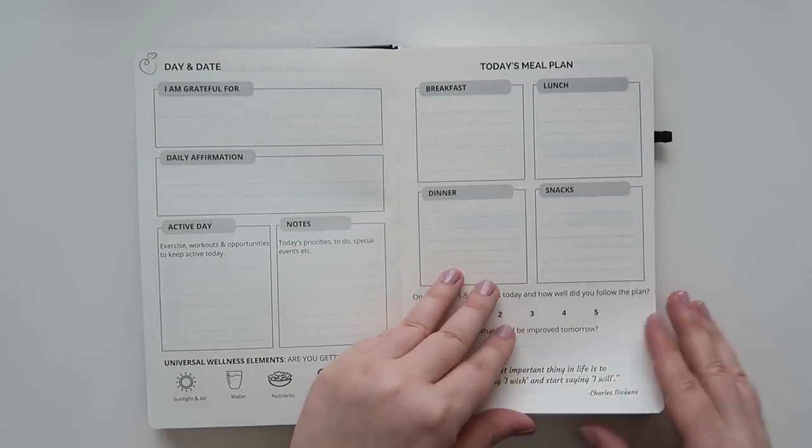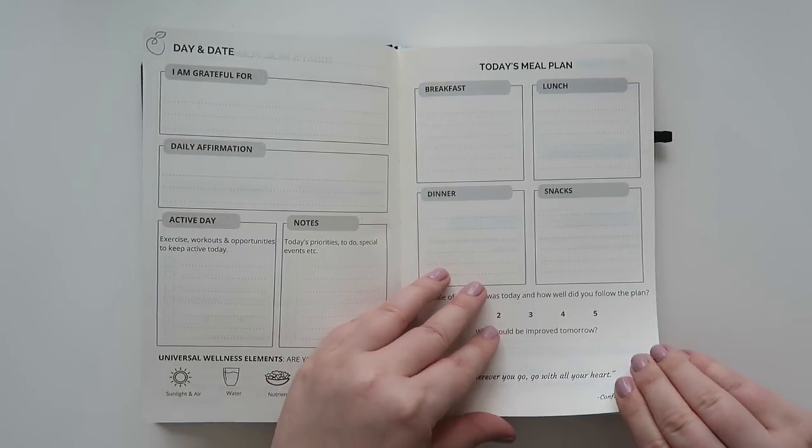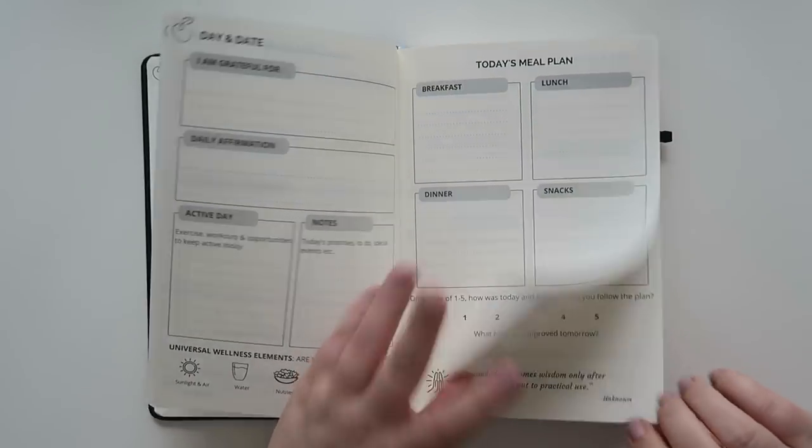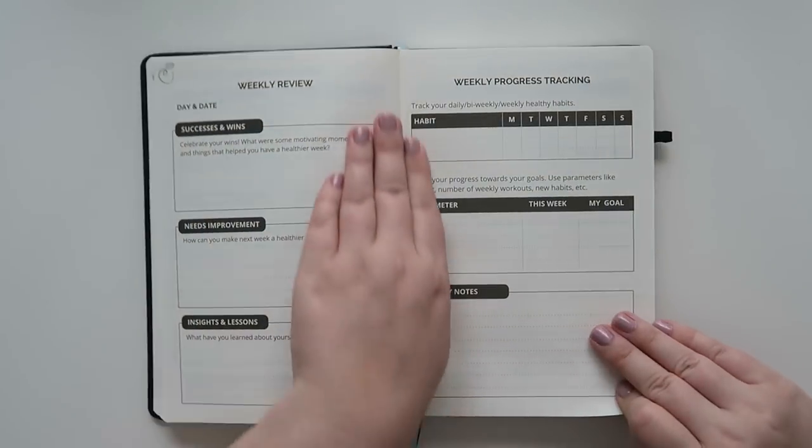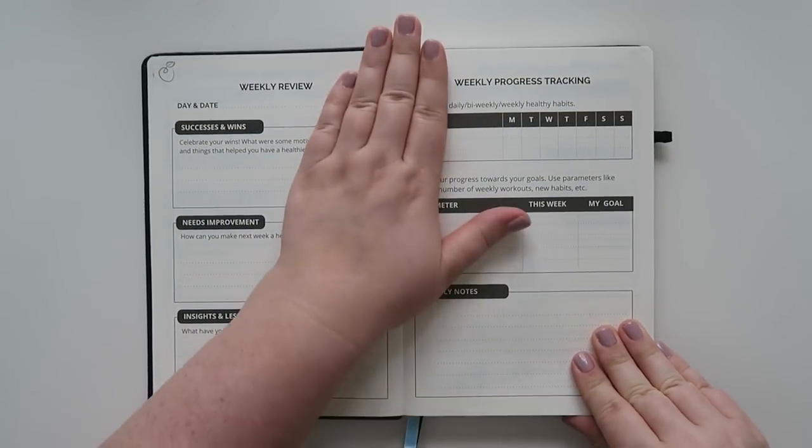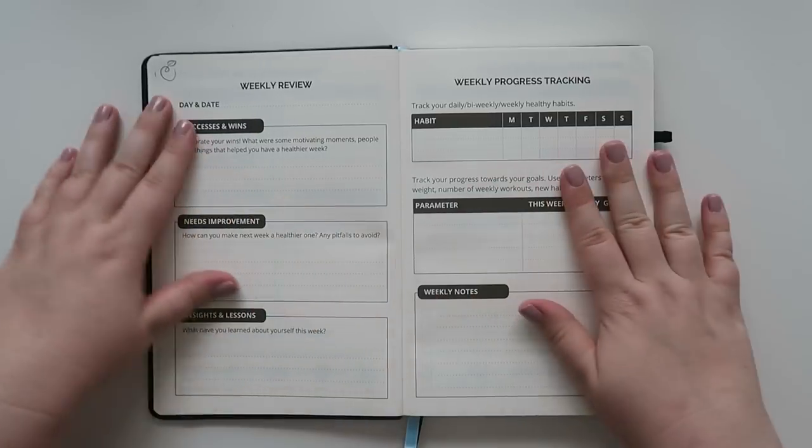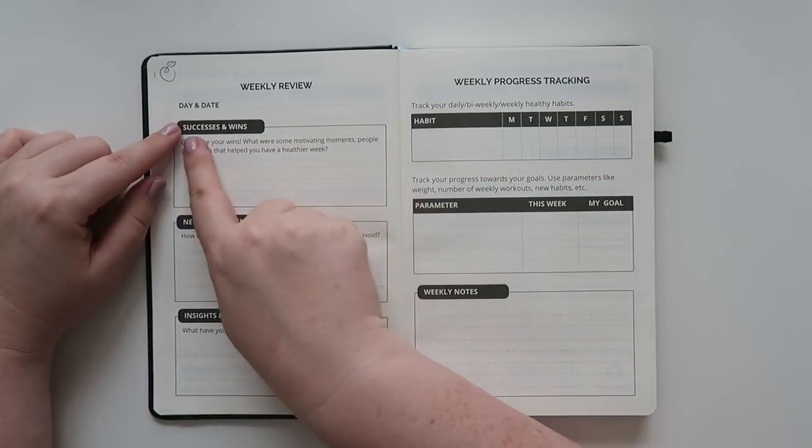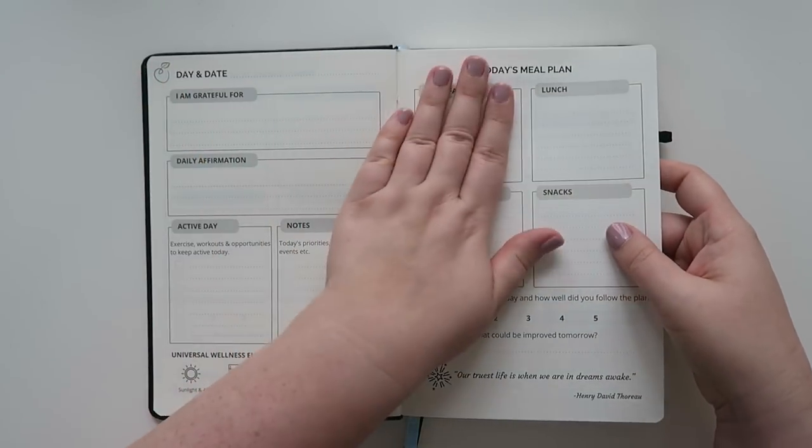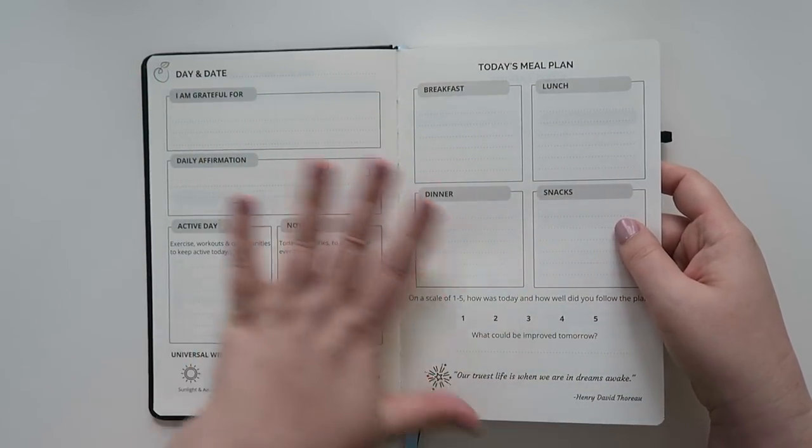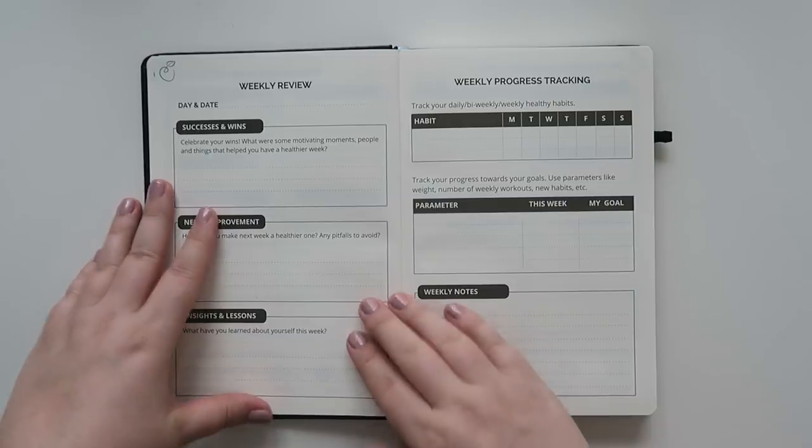All right. And so day and date all over again. And I believe, let's see here. All right. So you've got a whole week and then you have a weekly review. So you have your day and date success and wins. Oh, and all the days are the same, like the day and date. And then like your today's meal plan, all of those are the same throughout the seven days.